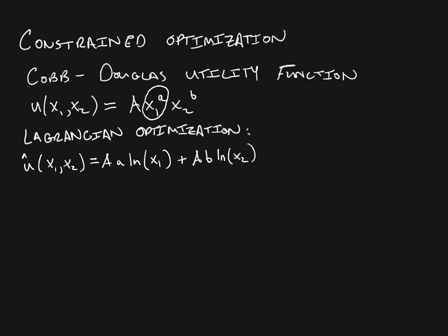So here is our new utility function — it is a monotonic transformation of the original, so the preferences are going to be exactly the same. This is our objective function. The constraint is the one we are familiar with: the budget constraint.